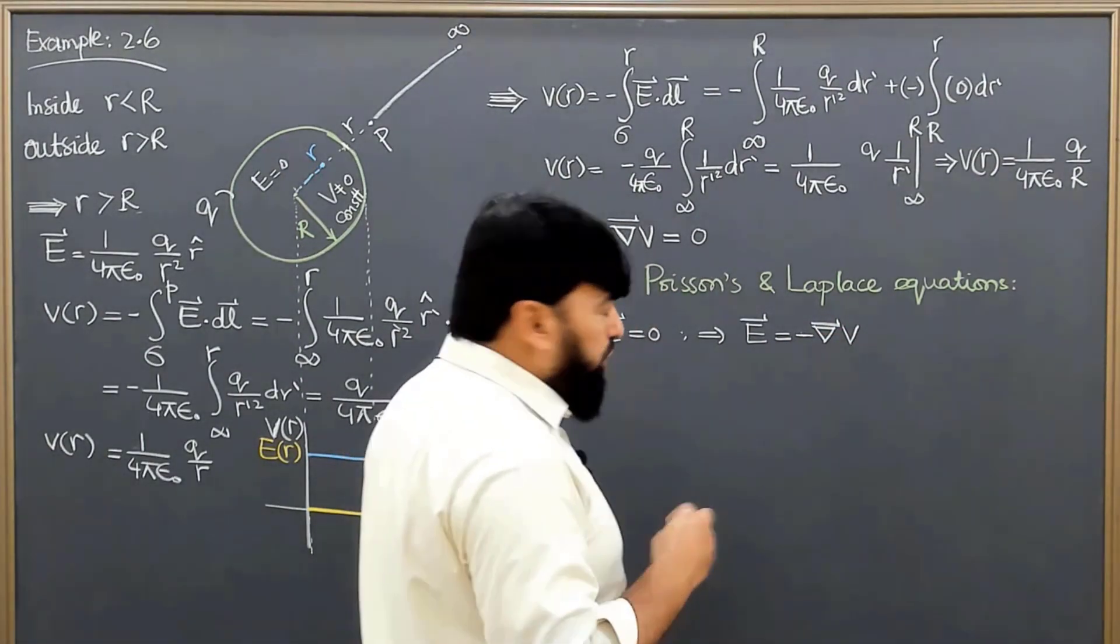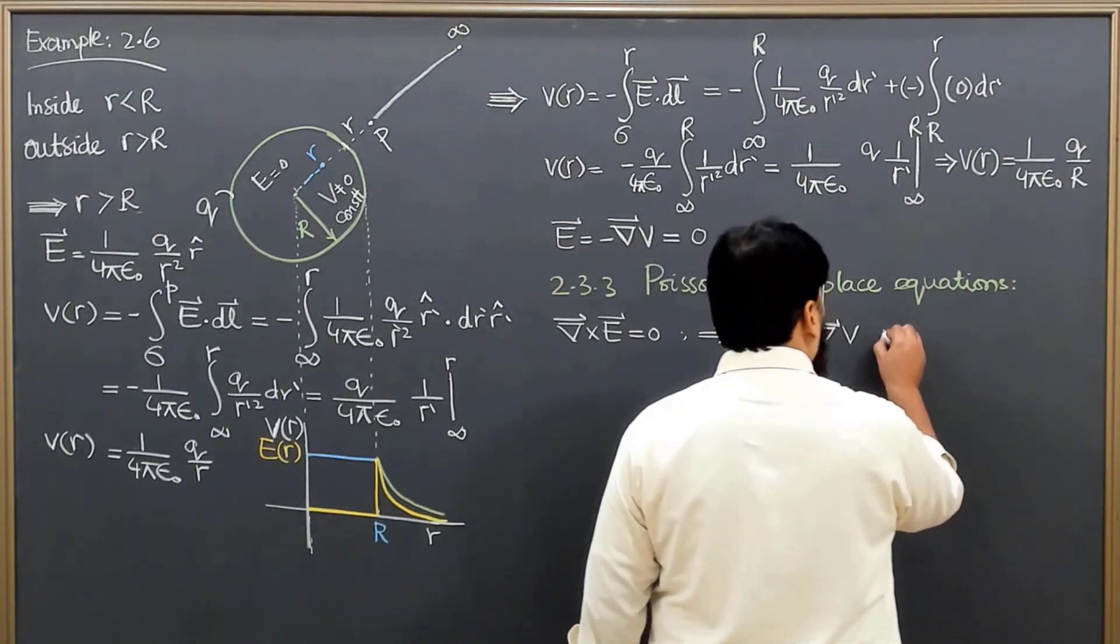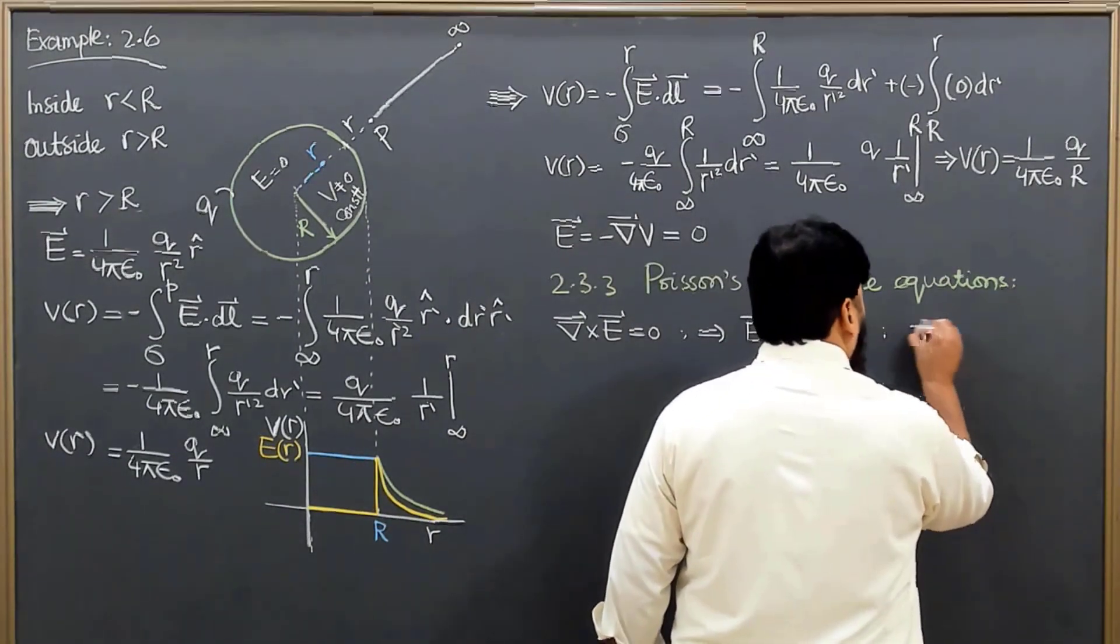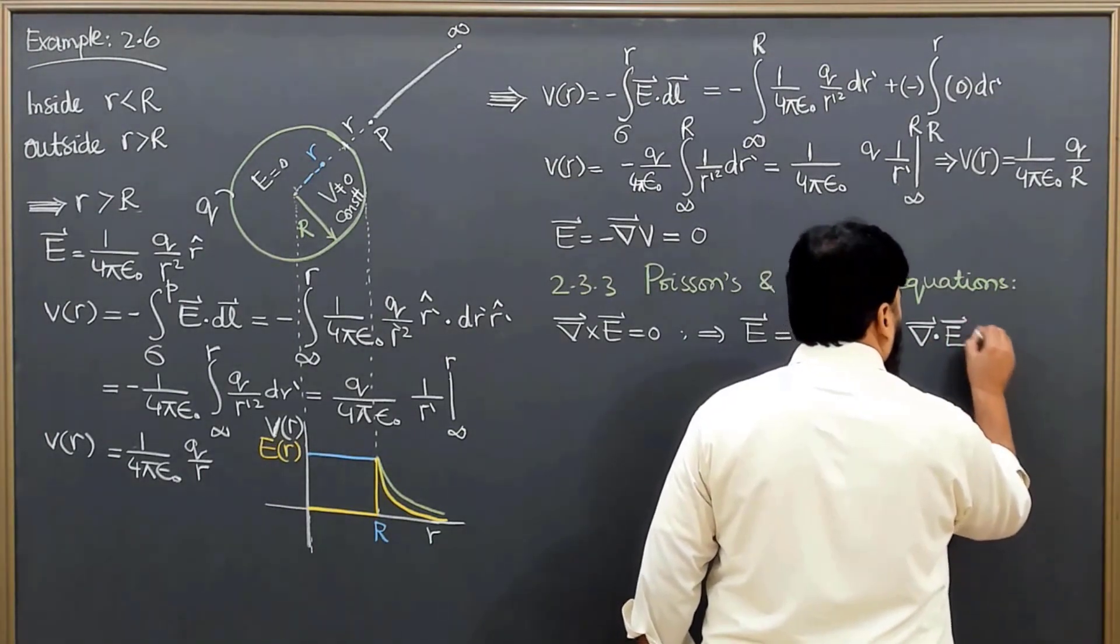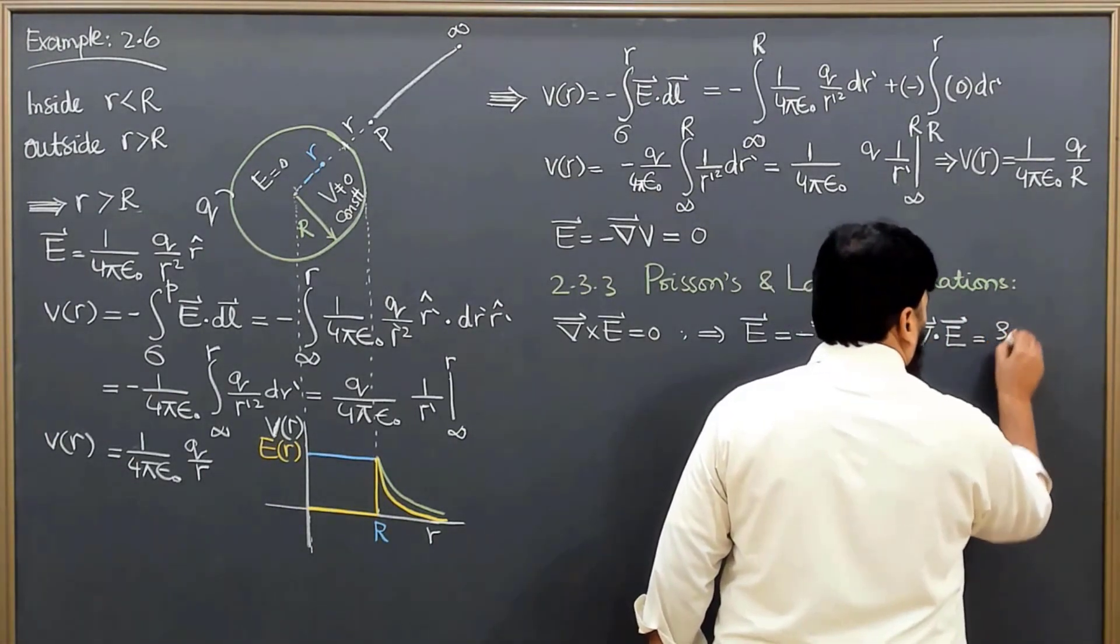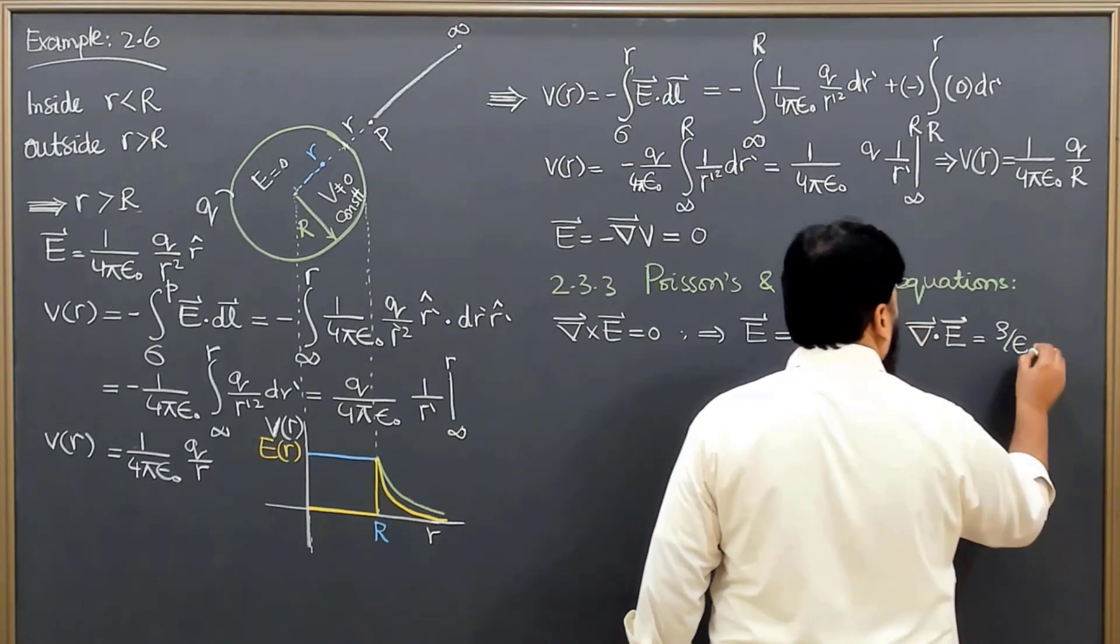Another thing we know about the electric field is from Gauss's law, that the divergence of electric field is equal to ρ over ε₀.